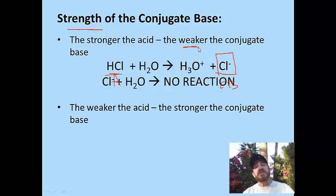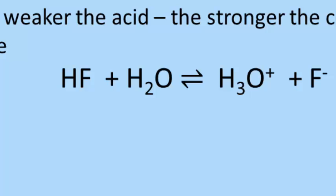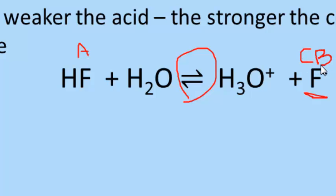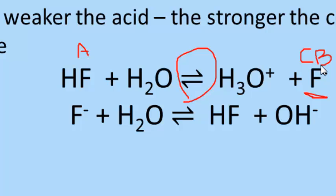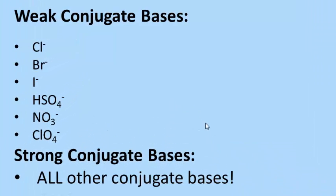The opposite is also true: the weaker the acid, the stronger the conjugate base. HF is a weak acid — notice the equilibrium arrow. Fluoride ion is its conjugate base. Since this is the conjugate base of a weak acid, that conjugate base is fairly strong. If you put fluoride ion with water, it actually reacts and does a great job of accepting that proton, forming hydrofluoric acid. The solution is basic because hydroxide is formed.